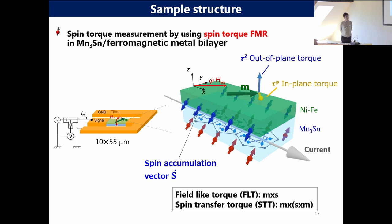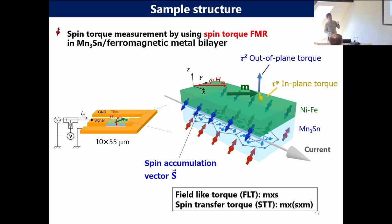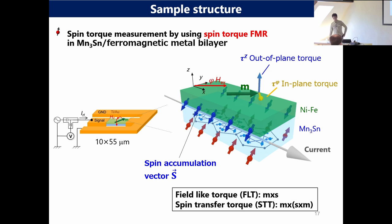In our case, we focus on Mn3Sn to generate out-of-plane spin components. This is the sample structure — we prepare a single crystal Mn3Sn and deposit a ferromagnet by thin film deposition. The Mn3Sn is shaped using FIB techniques, same as the previous topic. In this device, we apply the charge current in the Mn3Sn material. If there is some spin accumulation at the interface between the ferromagnet and the Mn3Sn, this spin accumulation affects the ferromagnet layer through spin-orbit torque. There are two types of torque: the field-like torque (M cross S) and the spin-transfer torque (M cross S cross M).